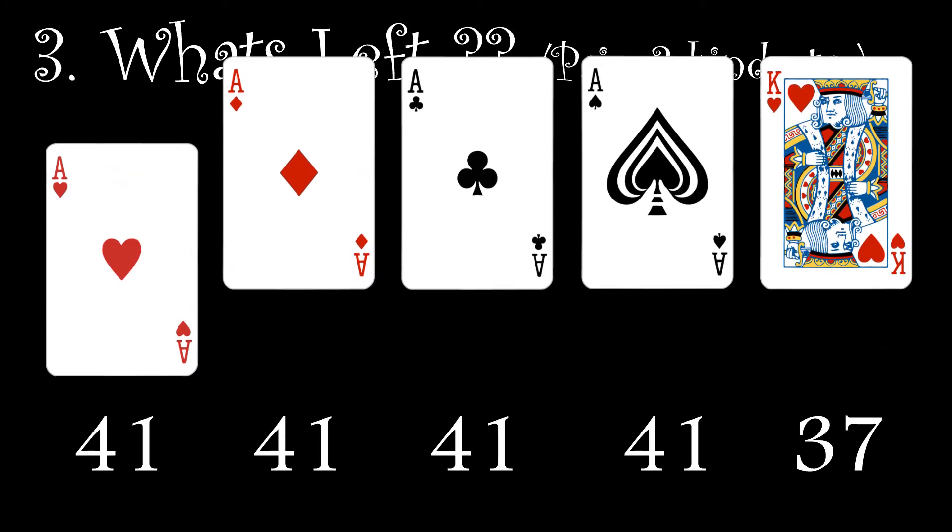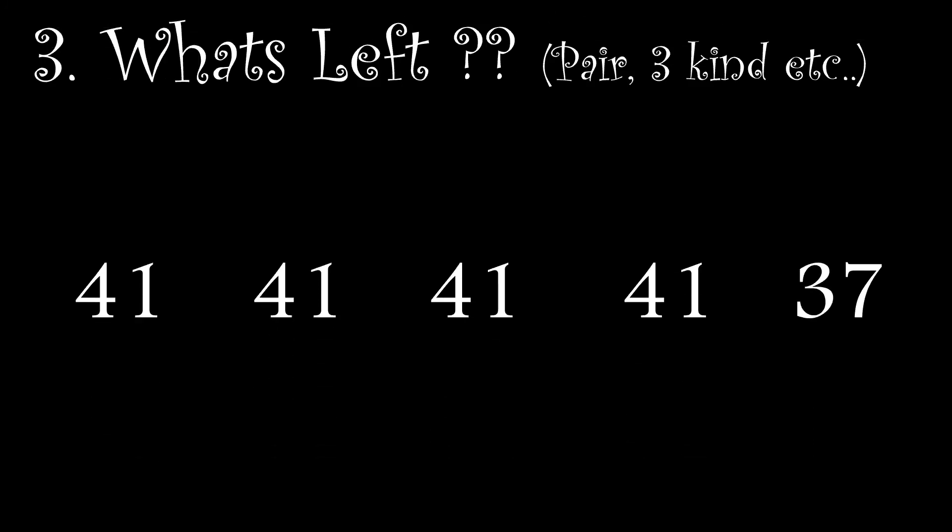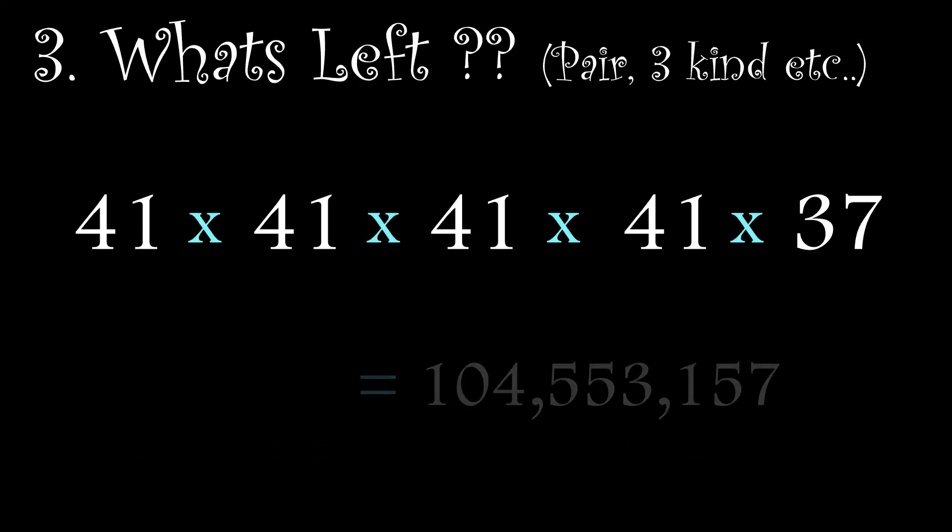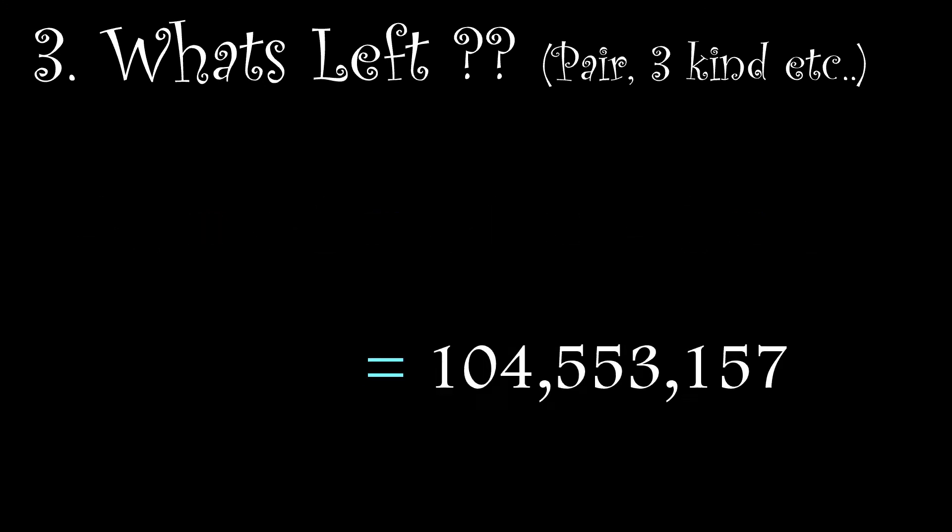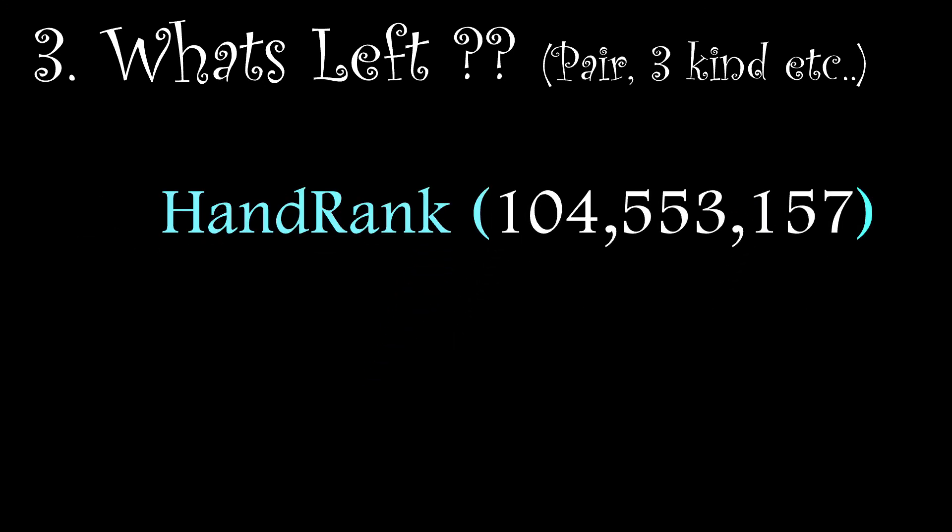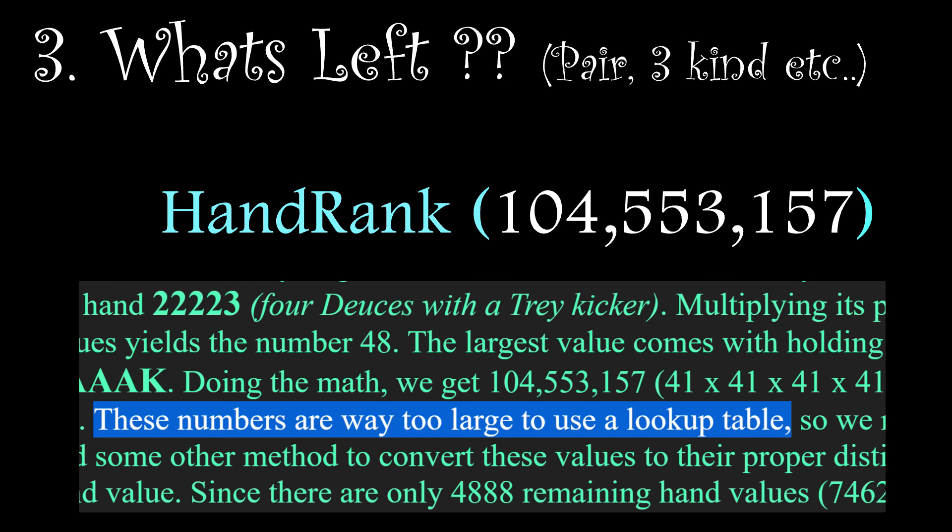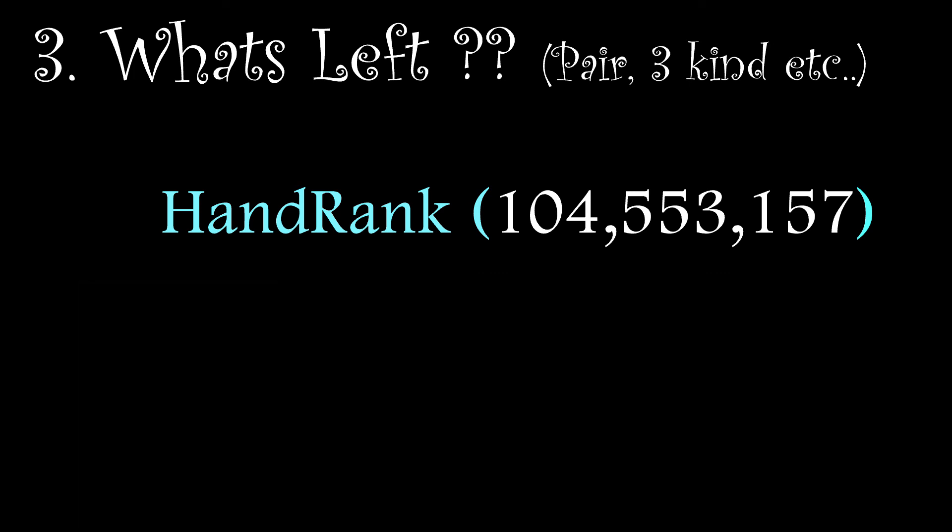The largest prime product possible is from the hand shown, and it's very large, over 104 million. Cactus Kev was of the opinion that it couldn't be used as a lookup table reference because these numbers are too large. Now maybe that was once the case, but these days it's not that big a deal to have such a large array. It's going to be mostly empty, of course, as we only have 4,888 hands left to classify, but it should be doable.